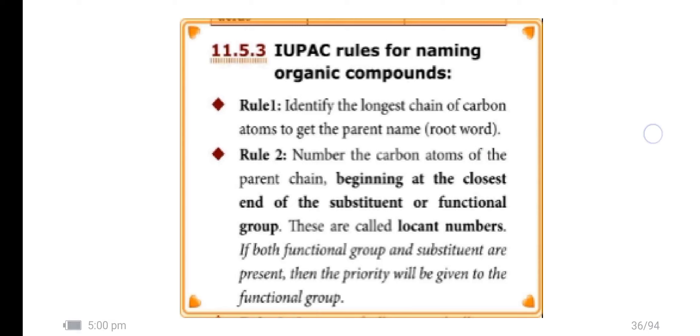IUPAC rules for naming organic compounds: Rule 1 - Identify the longest chain of carbon atoms to get the parent name root word. That is the number of carbon atoms in the parent chain.